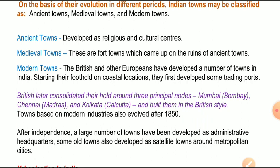The second is medieval towns या मध्यकालीन शहर। These are towns which came up on the ruins of ancient towns। मध्यकालीन शहर basically किले वाले शहर हैं, जो पुराने शहरों के ध्वस्त होने पर मध्यकालीन शासकों द्वारा किले के रूप में विकसित किए गए थे। And third is modern towns - The British and other Europeans developed a number of towns in India, starting their foothold on coastal locations and first developing some trading ports। आधुनिक शहर basically अंग्रेजों और यूरोपीय व्यापारियों द्वारा बसाए गए थे, तटीय क्षेत्रों में व्यापारिक केंद्रों के रूप में।